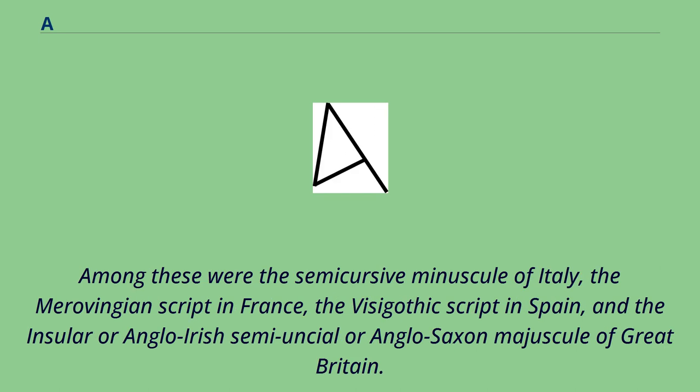Among these were the semi-cursive minuscule of Italy, the Merovingian script in France, the Visigothic script in Spain, and the insular or Anglo-Irish semi-uncial or Anglo-Saxon majuscule of Great Britain.